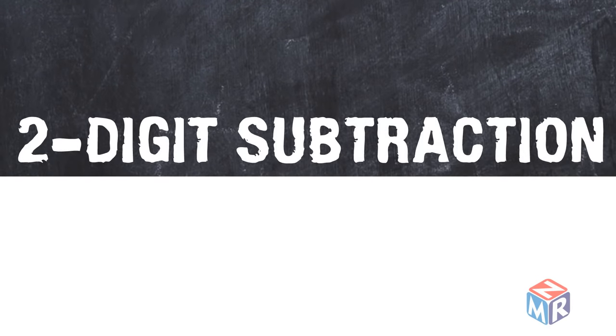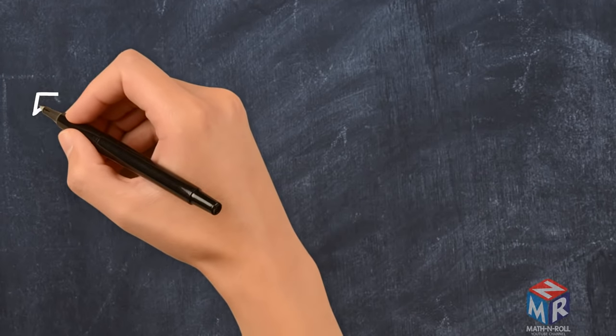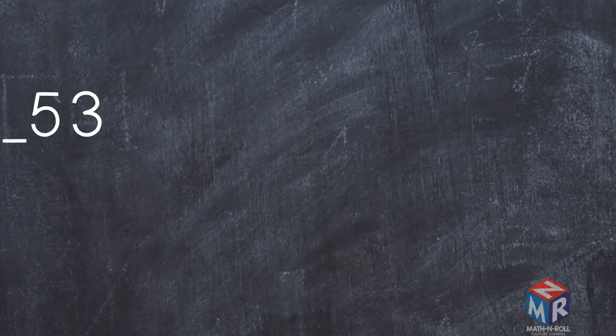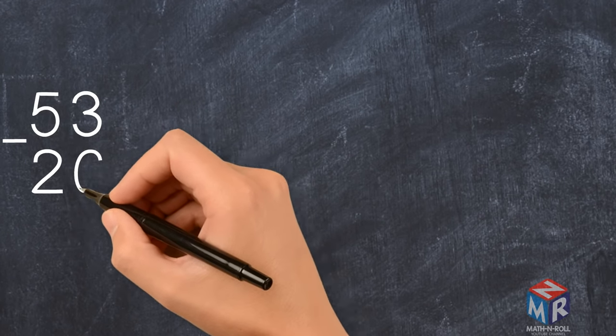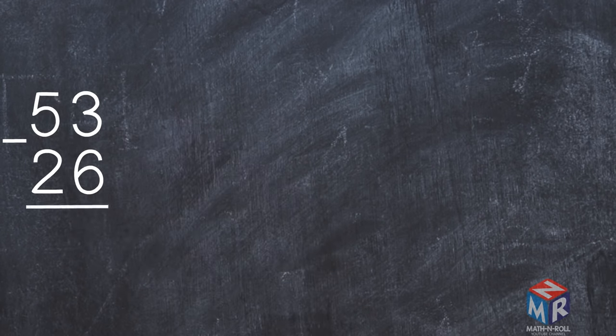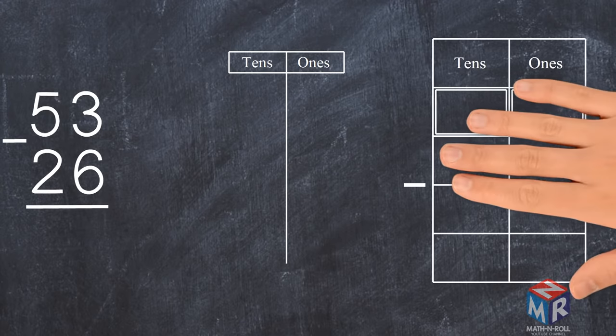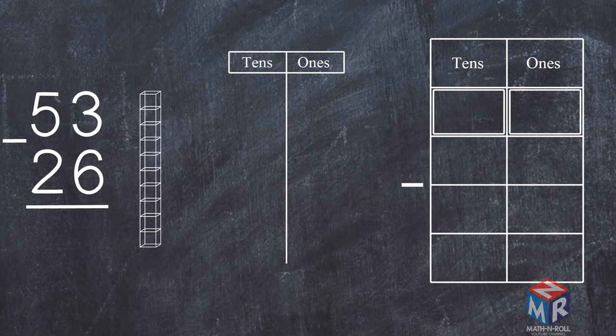Two-digit subtraction. 53 minus 26. Let's draw 53. 53 has 5 tens and 3 ones.